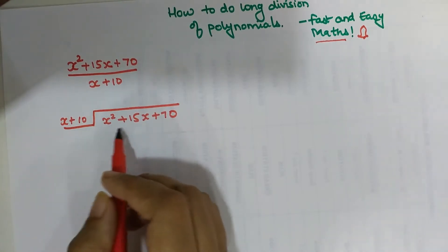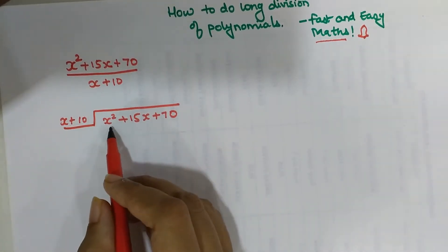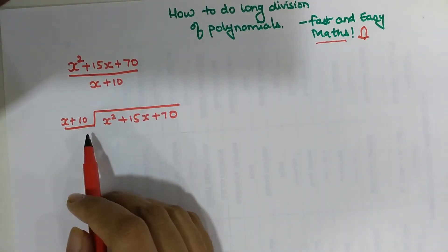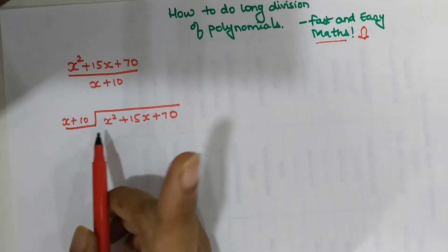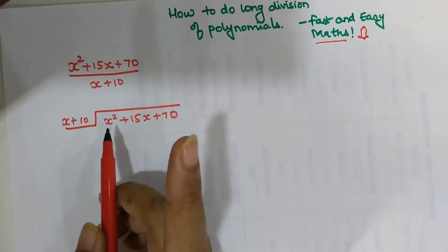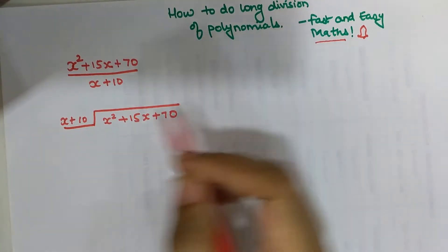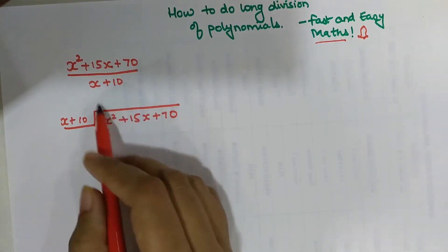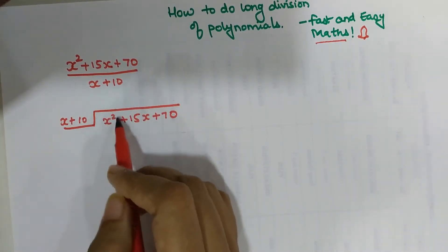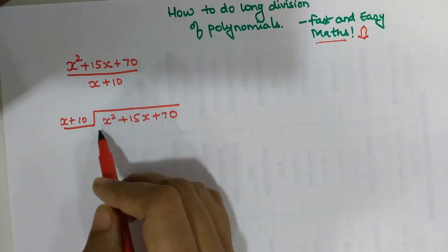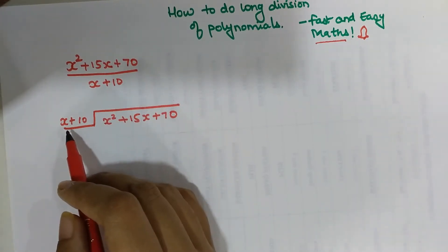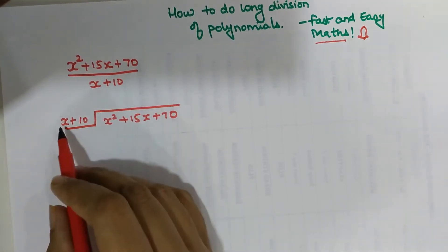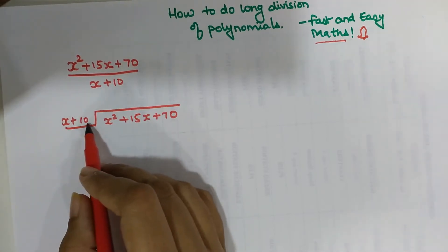We have the dividend x squared plus 15x plus 70, which has to be divided by x plus 10. The first golden rule of long division is that your quotient should be such that the very first variable is matched by the divisor. Since I have x squared in the dividend and x in the divisor, I am going to multiply the entire divisor by x.